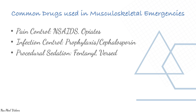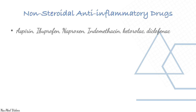Common drugs used in musculoskeletal pain control include NSAIDs and opiates. For infection control prophylaxis, cephalosporins are used. For procedural sedation, fentanyl is used; for reversal, naloxone. NSAIDs should not be used if the patient has bleeding or may need surgery to repair the wound.